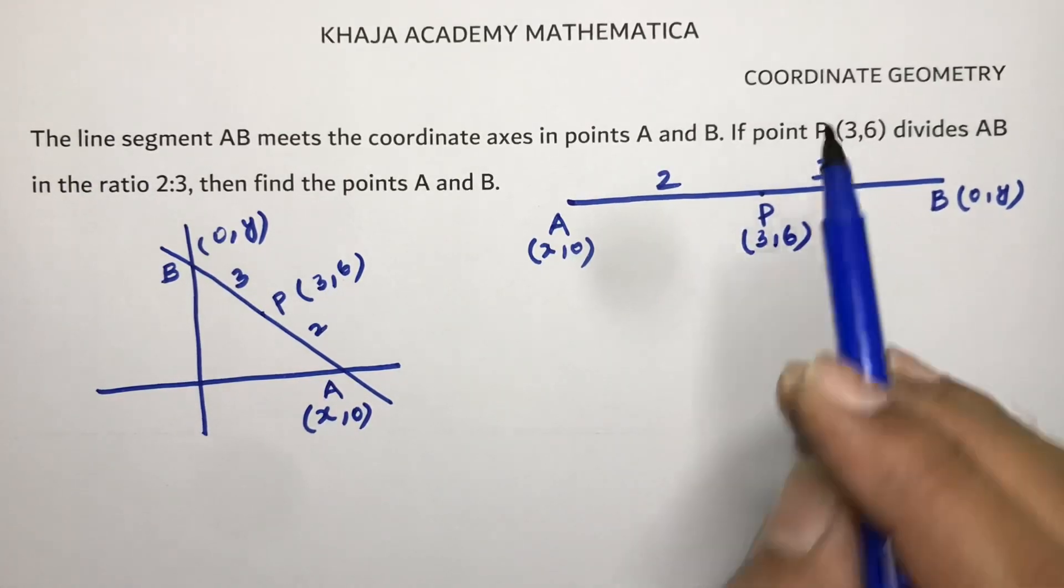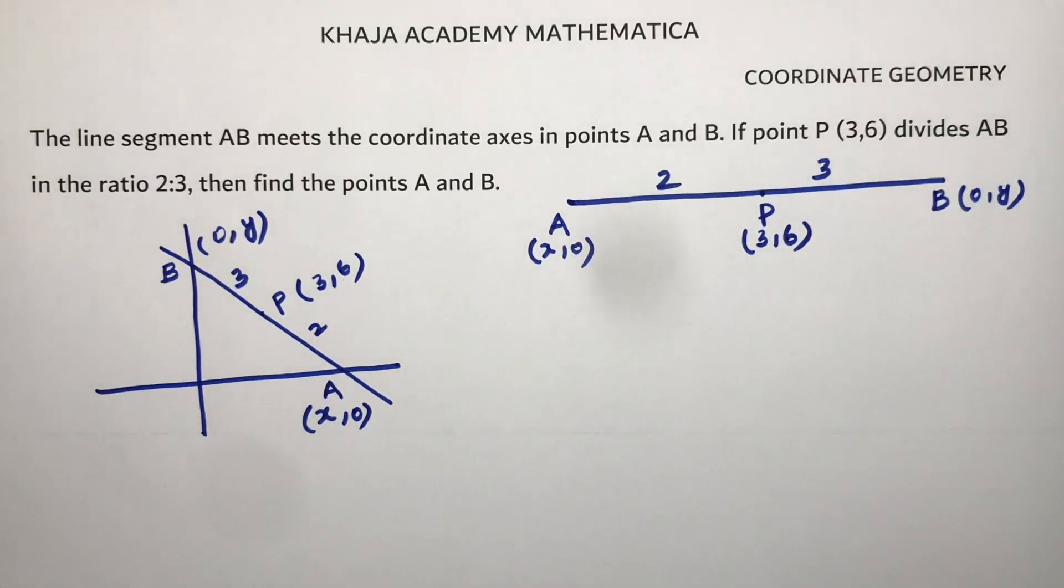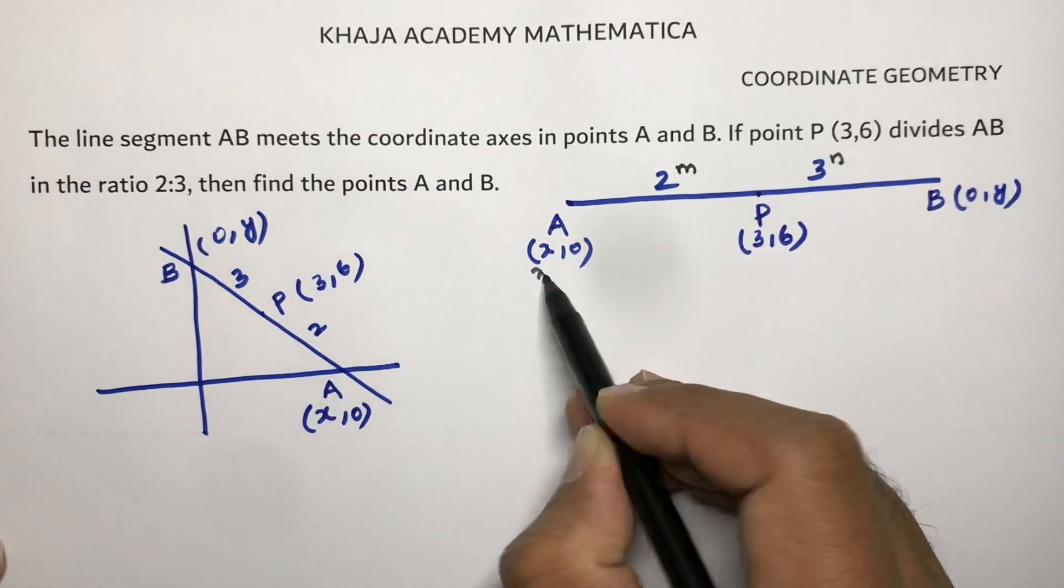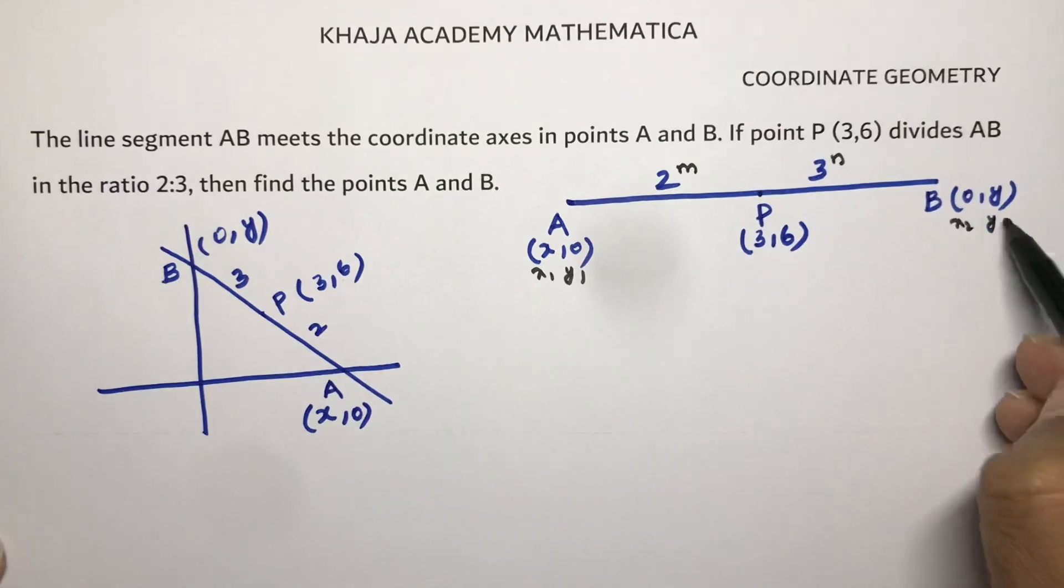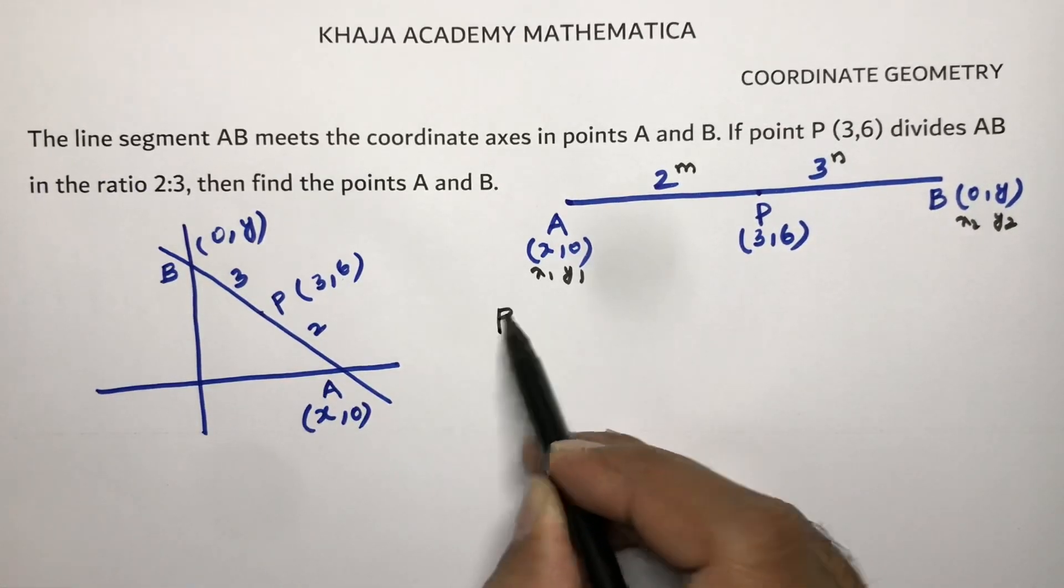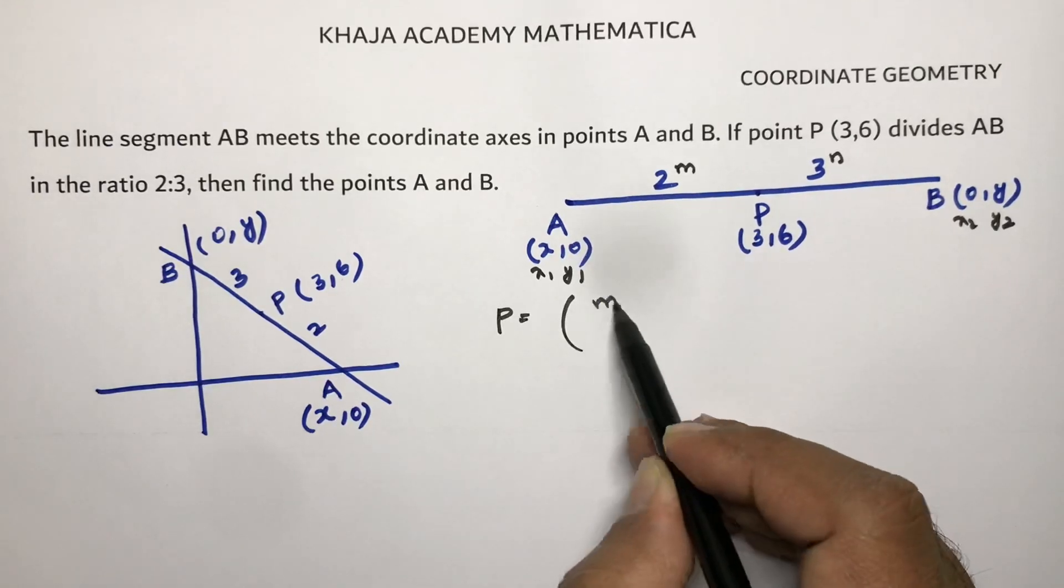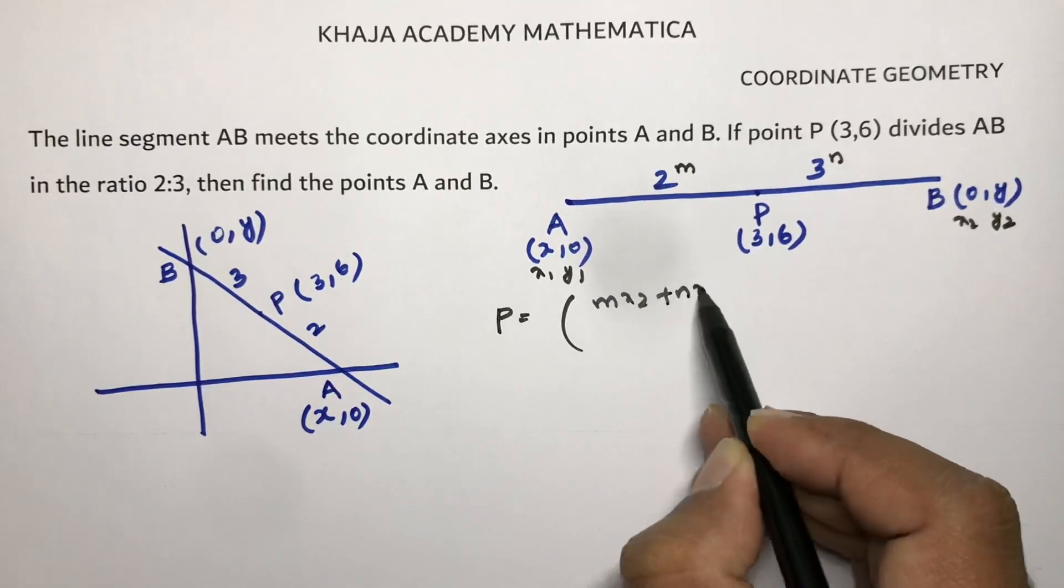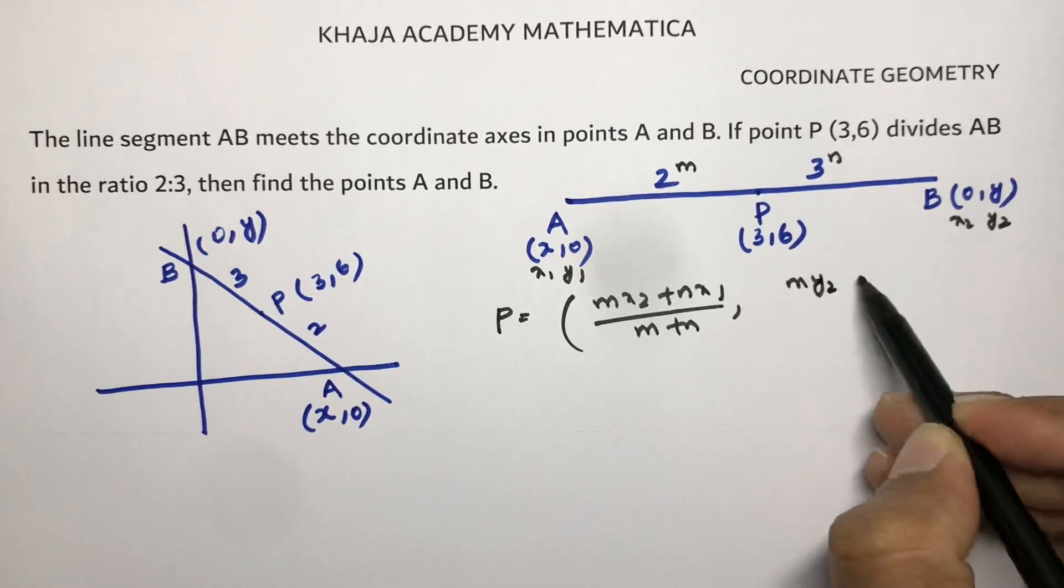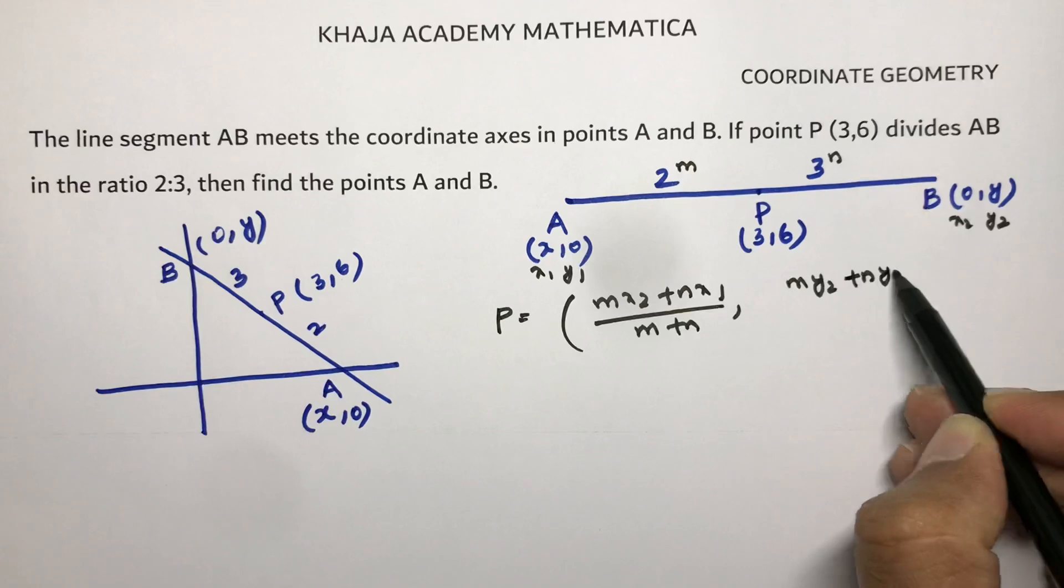Now if we'll solve this, consider this as m:n ratio. This is x1, y1, x2, y2. P is dividing in the ratio, so the section formula is P = ((m*x2 + n*x1)/(m+n), (m*y2 + n*y1)/(m+n)).